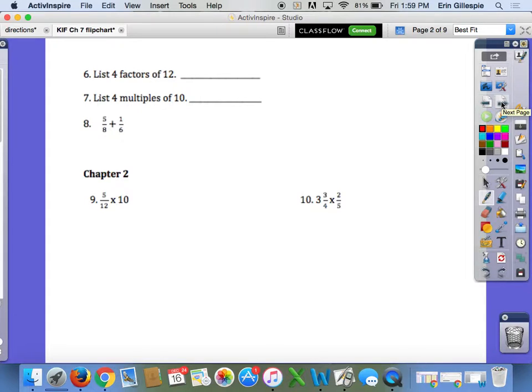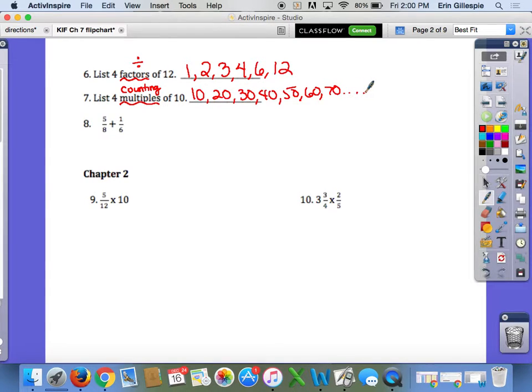Factors of 12. This is testing your knowledge of these vocab words. Factors are numbers that you can divide into 12, numbers that together would multiply to equal 12. I'm going to list all the possibilities because you might have picked different ones than me. There are 6 factors of 12, you just need any 4 of those. Multiples of 10, there's an unlimited number. It's like counting by 10: 10, 20, 30, 40, 50, 60, 70, etc. Any number that ends in 0 would be a multiple of 10.